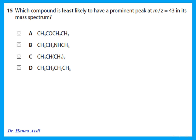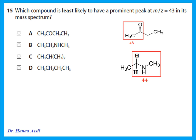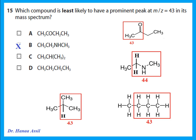Which compound is least likely to have a prominent peak at m/z = 43 in its mass spectrum? Looking at the structures, compound A has a fragment that gives 43. Compound C and D also have portions giving 43. Compound B: whichever fragment you choose, there is no way to give 43 — it would give 44 for example. So compound B is least likely to give a peak at m/z = 43.